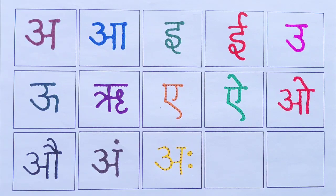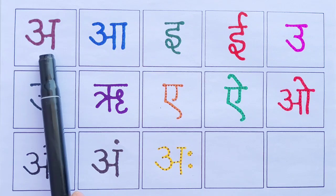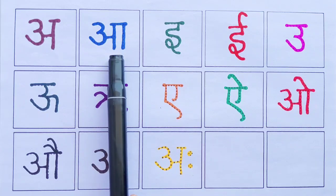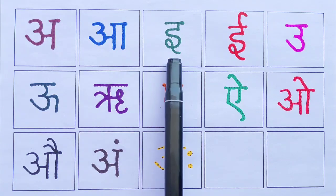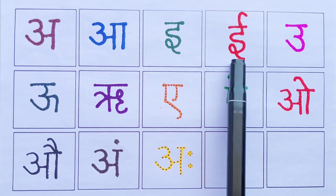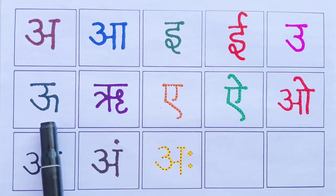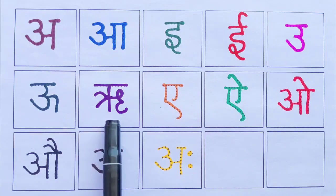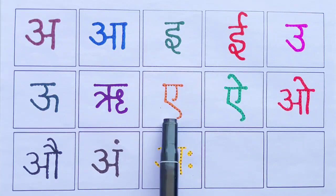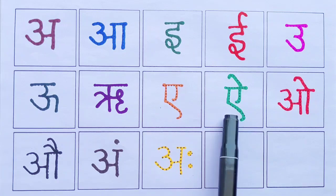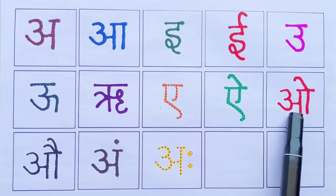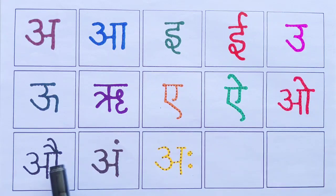आओ, फिर से दोहराई. ओ, आ, इ, ई, उ, ऊ, री, ए, आई, ओ, आउ, अंग, ओह.